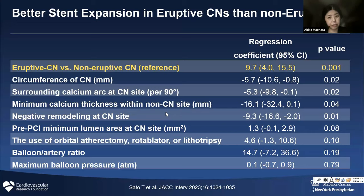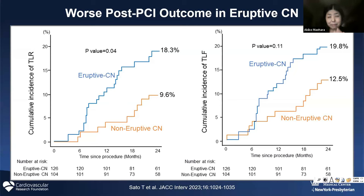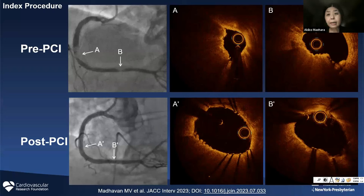However, when we looked at outcomes, it was a big surprise to me. I didn't expect such a result. Compared between two groups, the eruptive calcified nodule had almost double the events compared to non-eruptive — quite a surprise, and really opposite to the stent expansion findings. This is a case example: you can see very typical radiolucent appearance, and by OCT an irregular surface with no fibrous cap — an eruptive calcified nodule. After stenting, a nice relatively round stent expansion. But already some re-protrusion of the calcified nodule was visible.